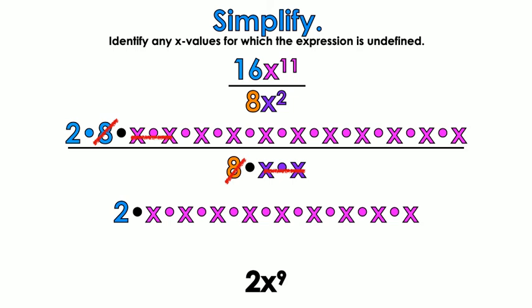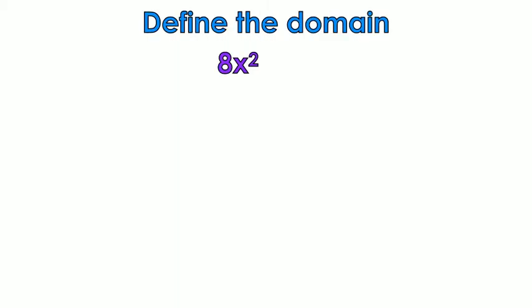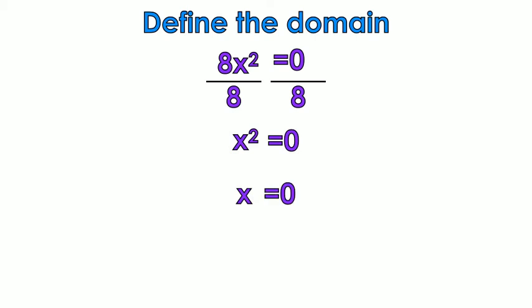Now take the denominator, which is 8x squared, and set it equal to 0. Divide by 8 on both sides: x squared equals 0. Take the square root of both sides and get x equals 0. So x cannot equal 0, because we cannot have anything in the denominator that makes it equal to 0 — that would be undefined, and we cannot have an undefined function.